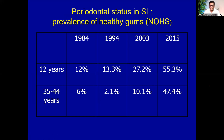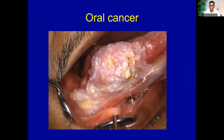The level of periodontal disease in a population is expressed as the percentage of healthy gums. During the past few decades, we have improved in that aspect. The prevalence of healthy gums in 12-year-olds has improved from 12% to 55%. That means only 55% of our population is having healthy gums — still 45% is having unhealthy gums. We still have something to achieve in this aspect.